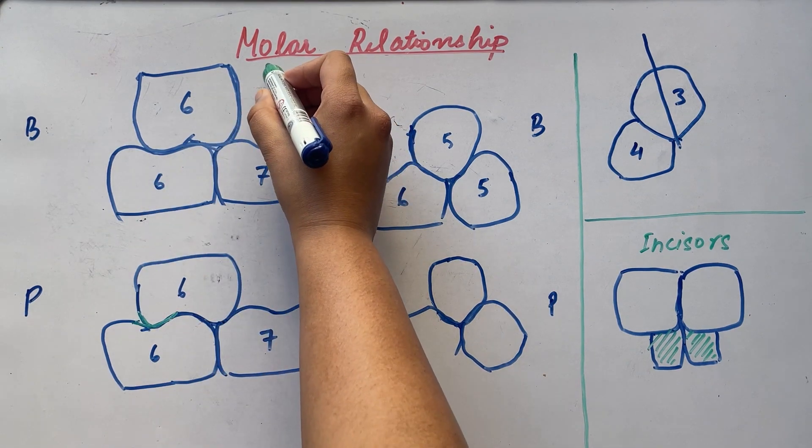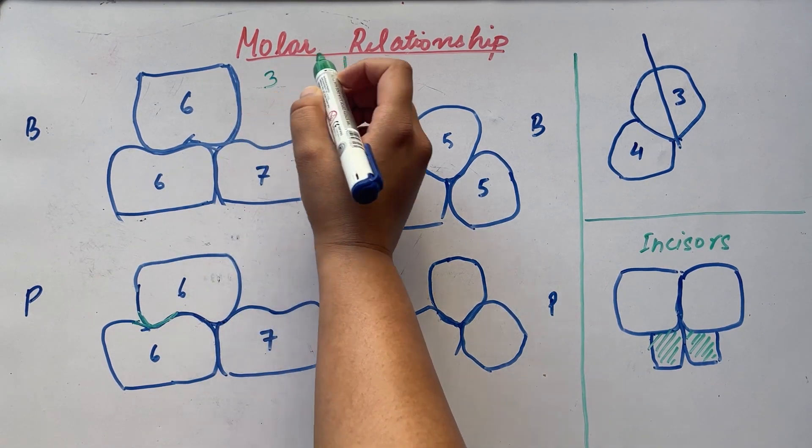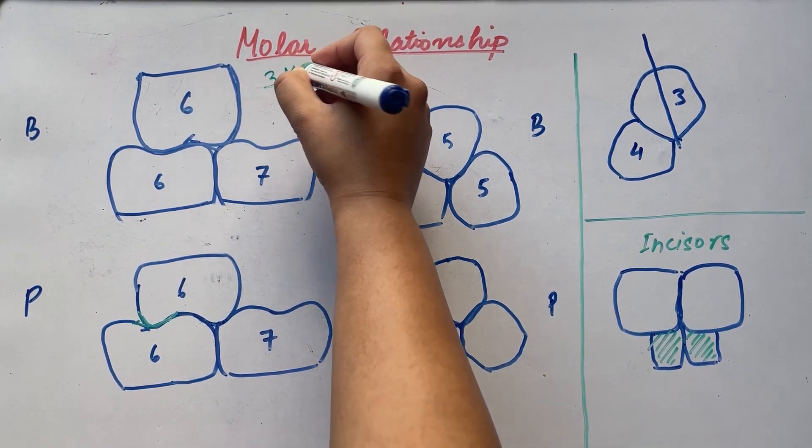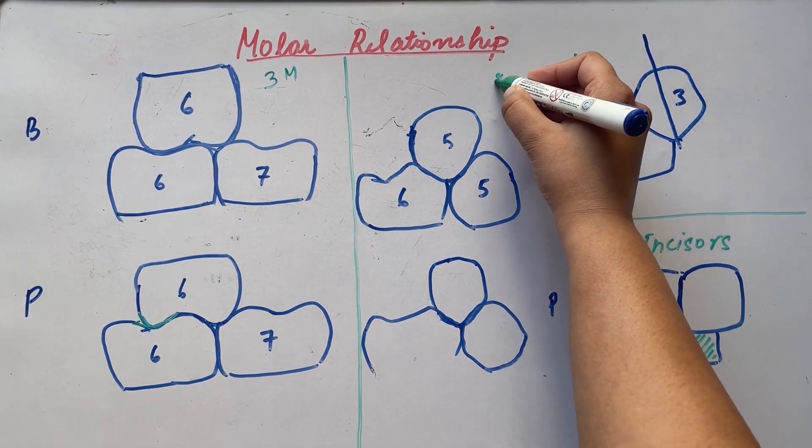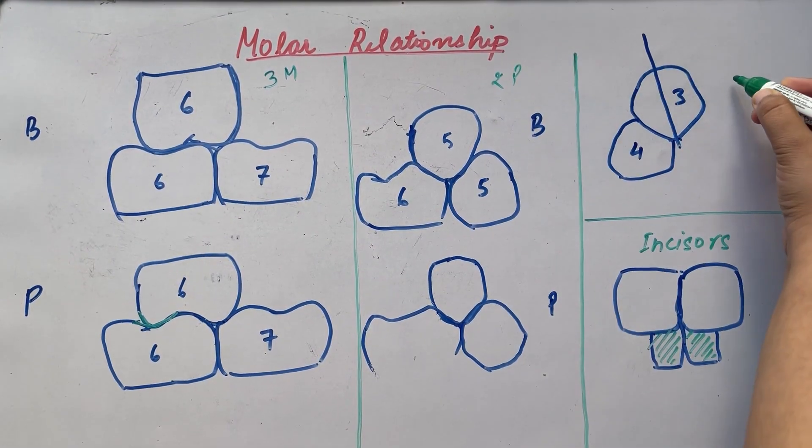Key 1 is the interarch relationship. It further has 7 points. There are 3 points for molar, 2 points for premolar, for canine and incisors.